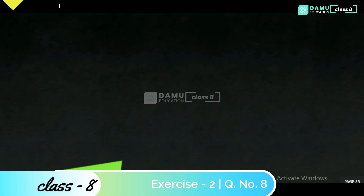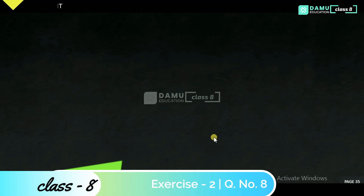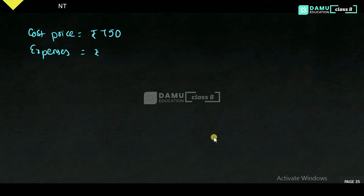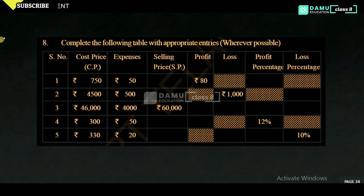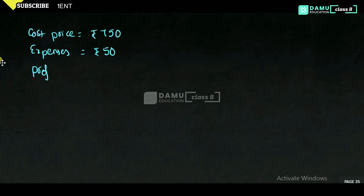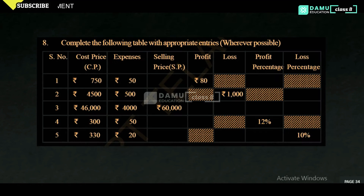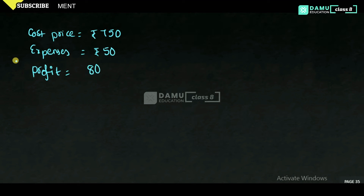Cost price will be 750 rupees, then expenses will be 50 rupees. They are also given profit, which will be equal to 80 rupees. We have to find selling price and profit percentage.